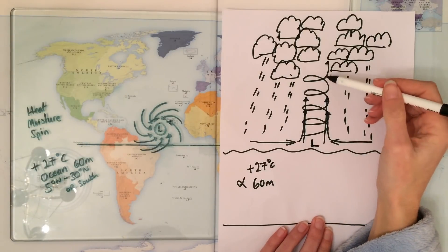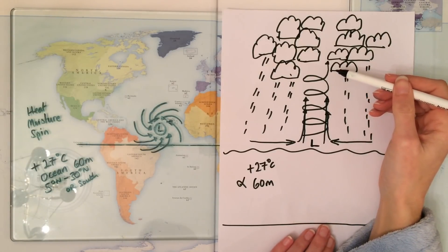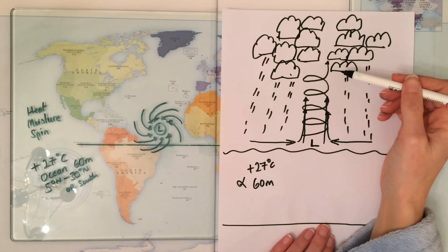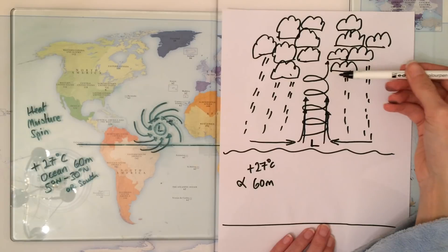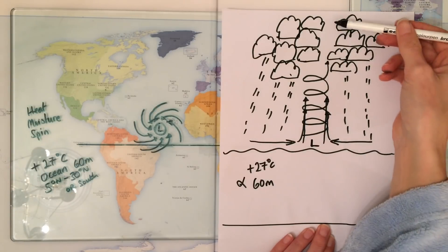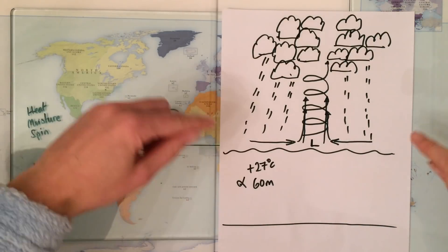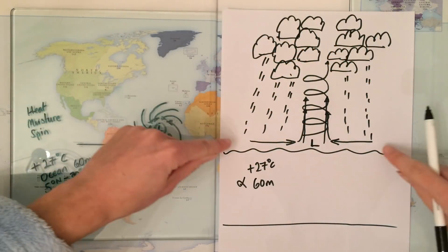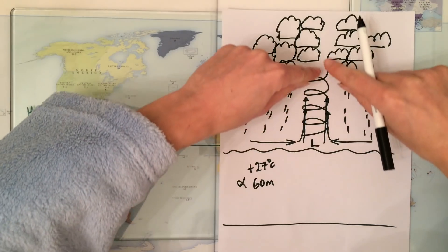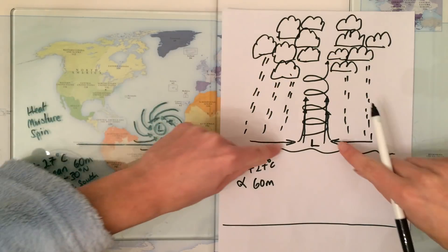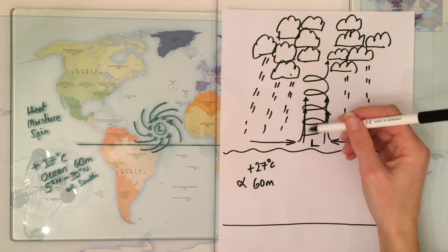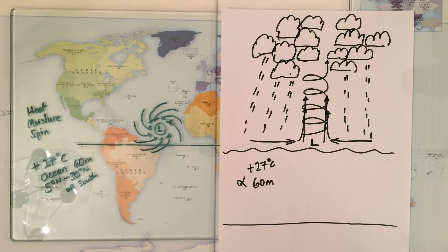When the air rises, cools, and condenses, it also releases heat, and that heat drives the storm further, which is why it can grow to such a big height. We end up with a storm where air is being sucked in, rising, cooling, condensing to form clouds. More air is being sucked in, rising, cooling, condensing to form clouds. This is all happening rapidly, and that rapid rising air is creating very windy conditions.